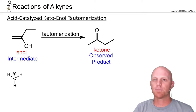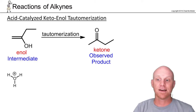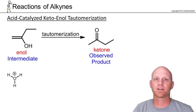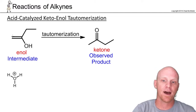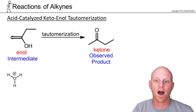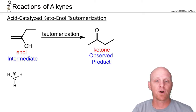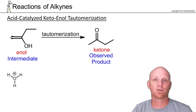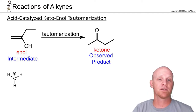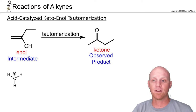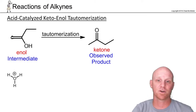This mechanism looks more complicated than it is. It's actually simply two proton transfer steps in a row. We're going to need to add a proton to this carbon and then remove one from the oxygen — those two steps. Whether you protonate or deprotonate first depends on if you're in acid or base. Under acidic conditions you protonate first; under basic conditions you deprotonate first, and that's the big difference.